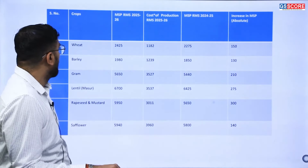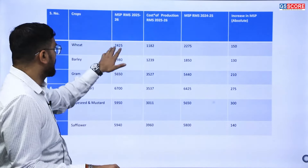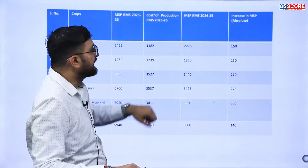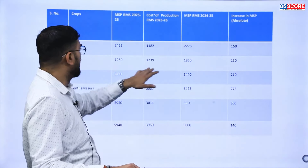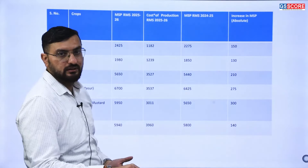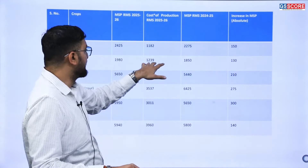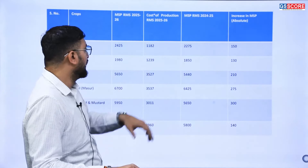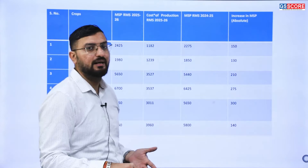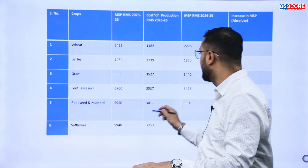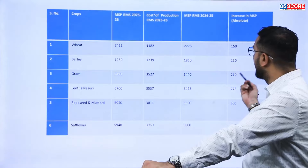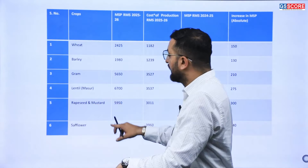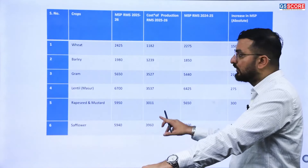For example, the MSP for wheat for 2025-26 is announced as 2425 rupees per quintal; in 2024-25 it was 2275 rupees, representing an increase of about 150 rupees. According to PIB data, the cost of production for wheat in 2025 is estimated at 1239 rupees per quintal — multiplying by 1.5 gives an MSP of 1850 rupees. The government has further increased this by 130 rupees to 1980 rupees for the next year.